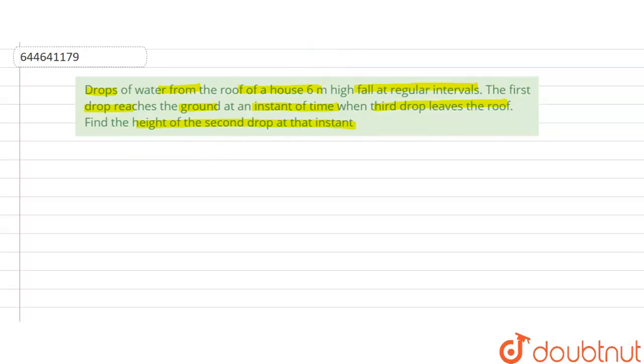Find the height of the second drop at that instant. We have been given that h_max, that is the height of the house, is 6 meters.